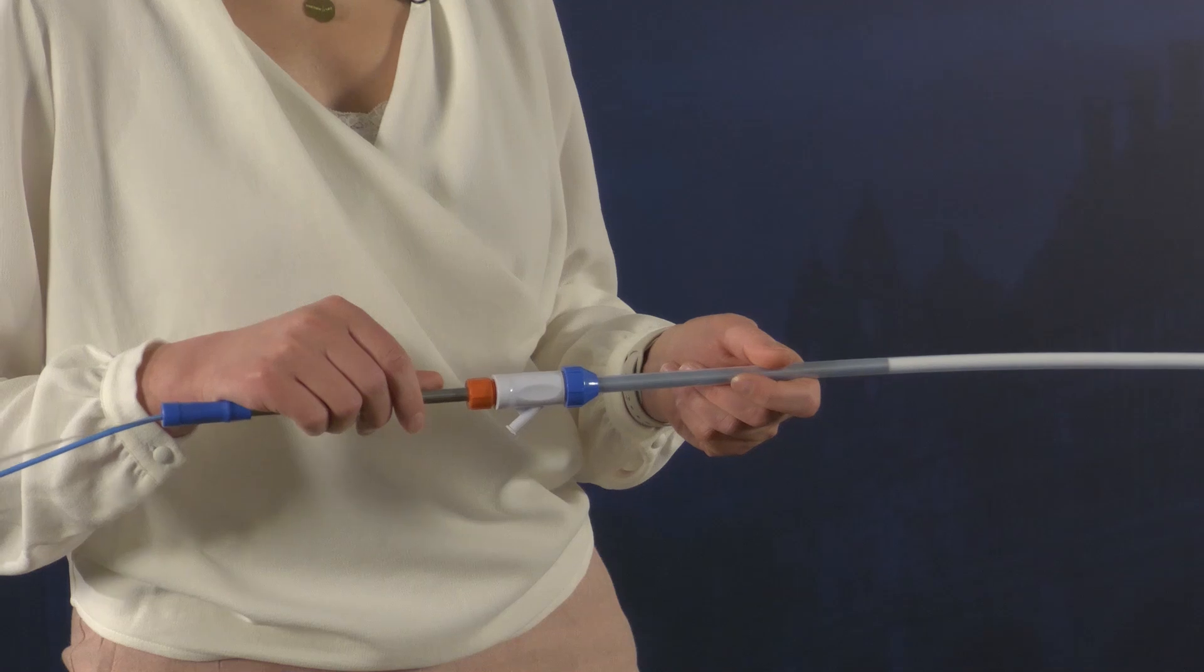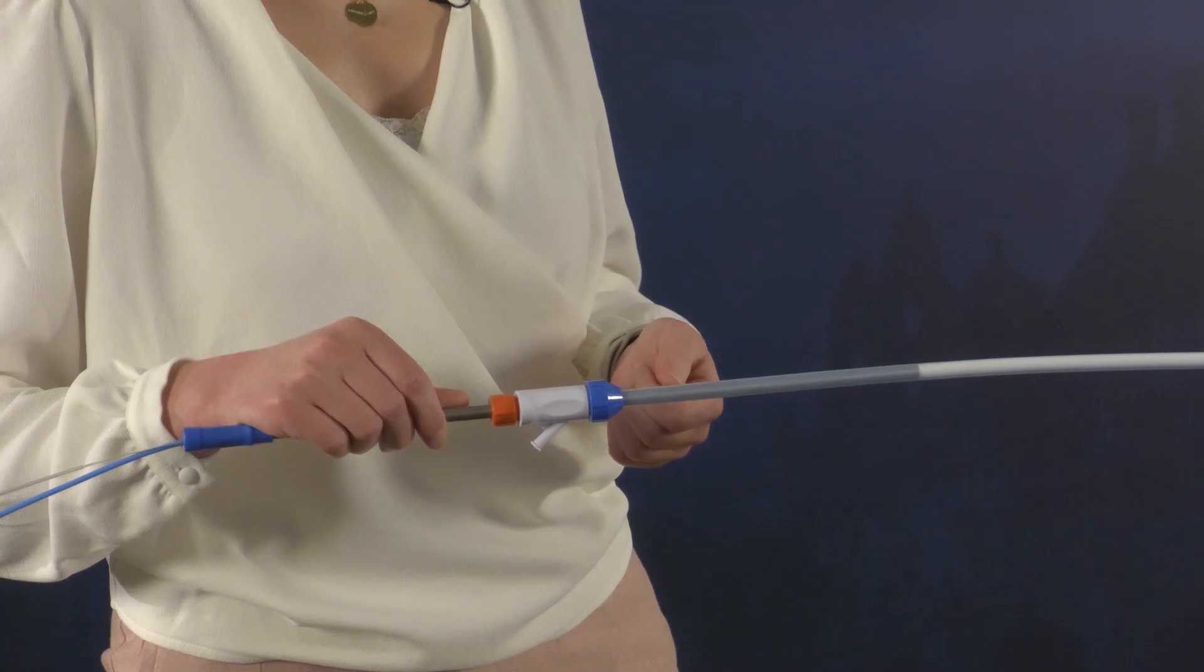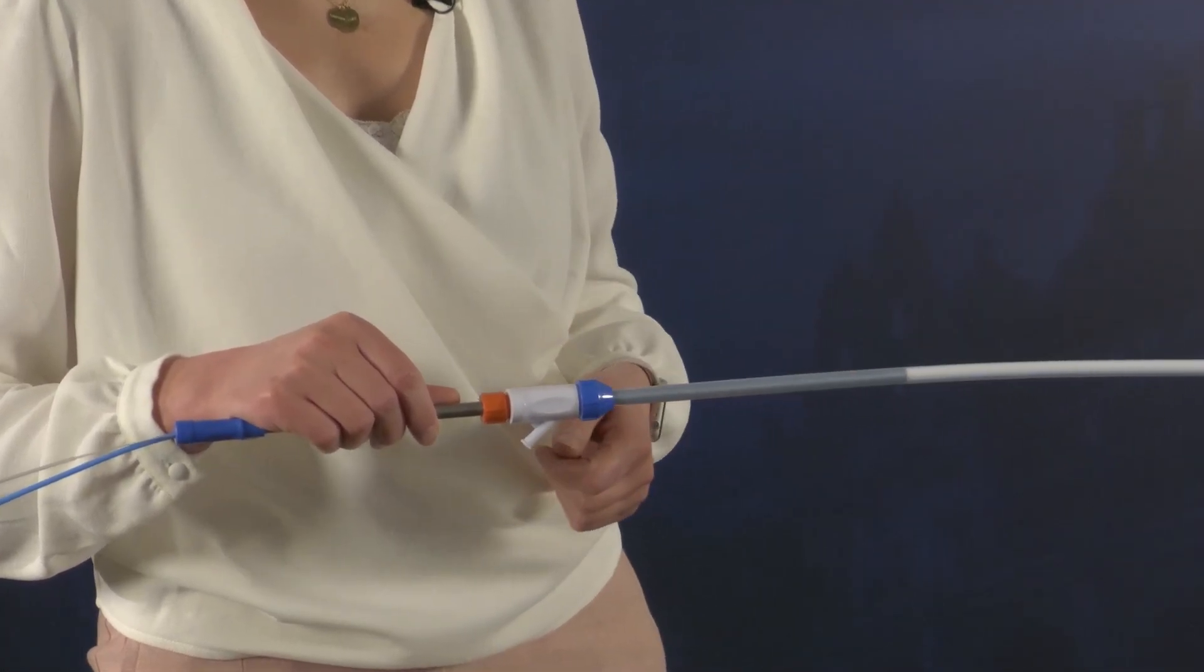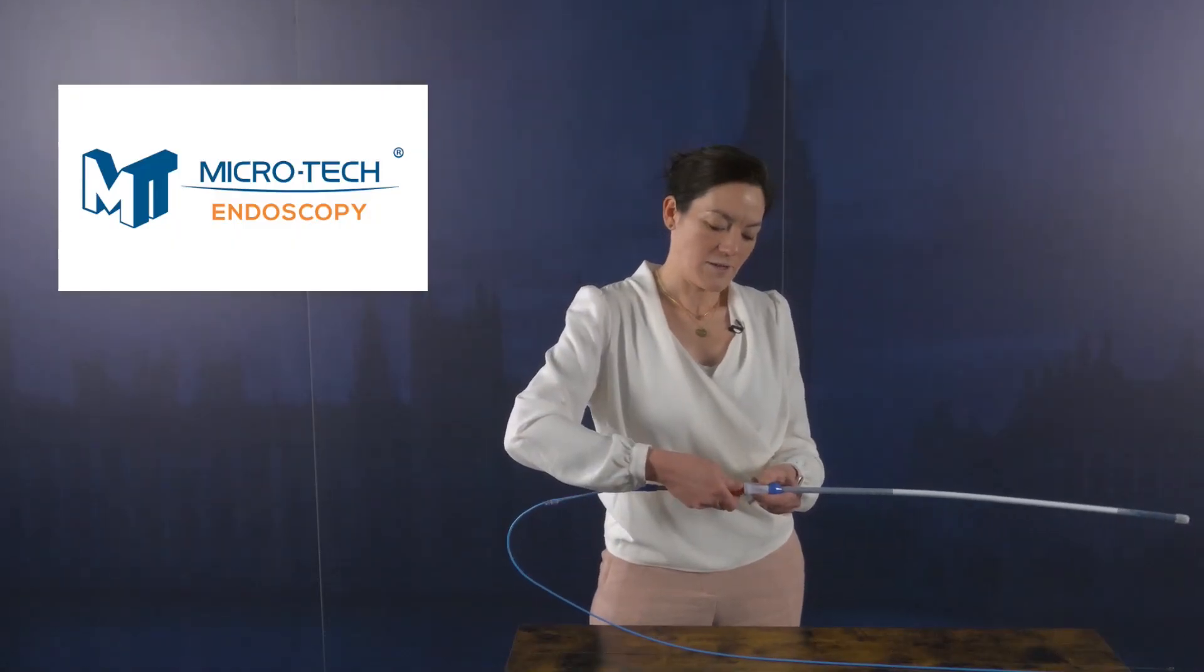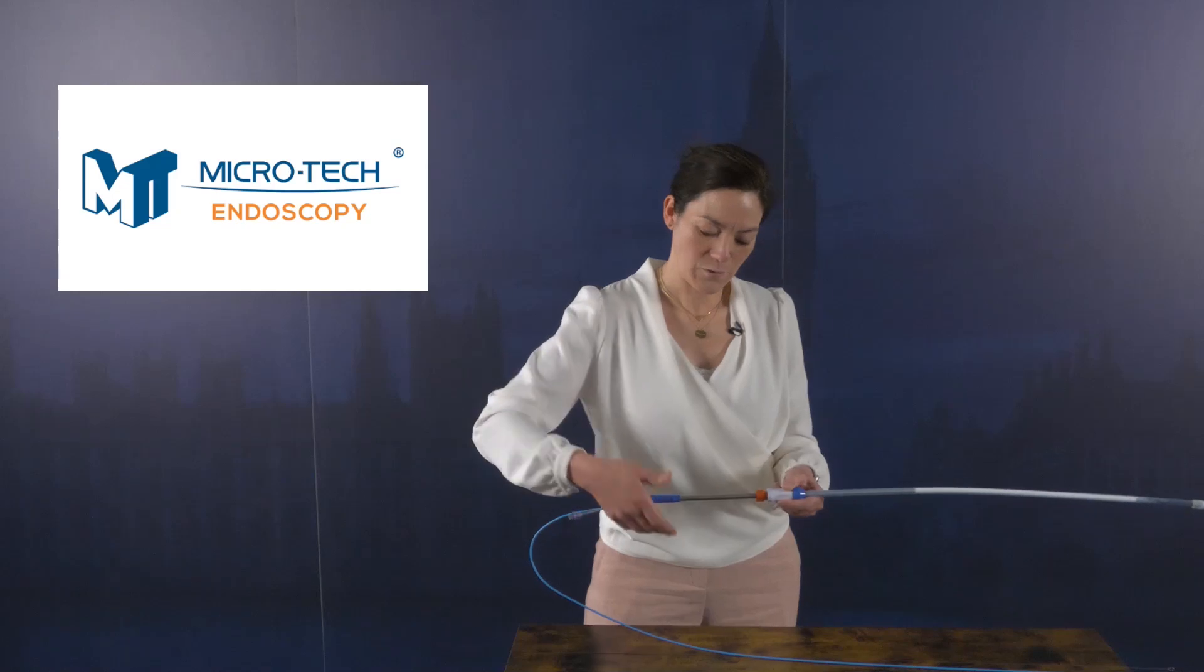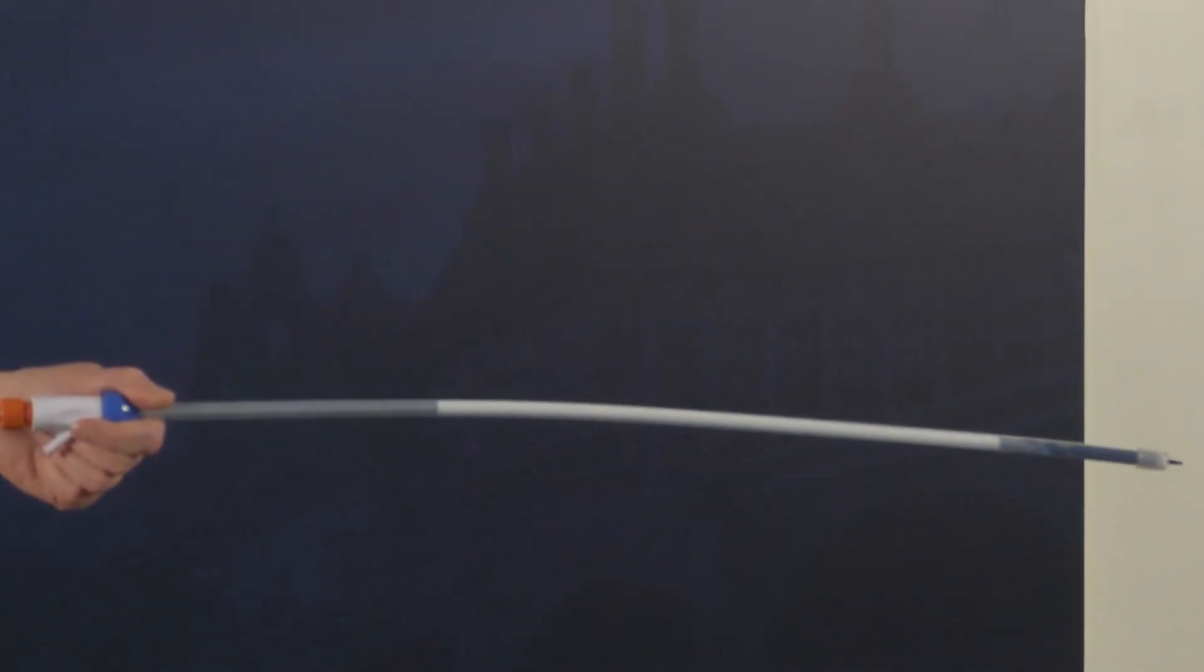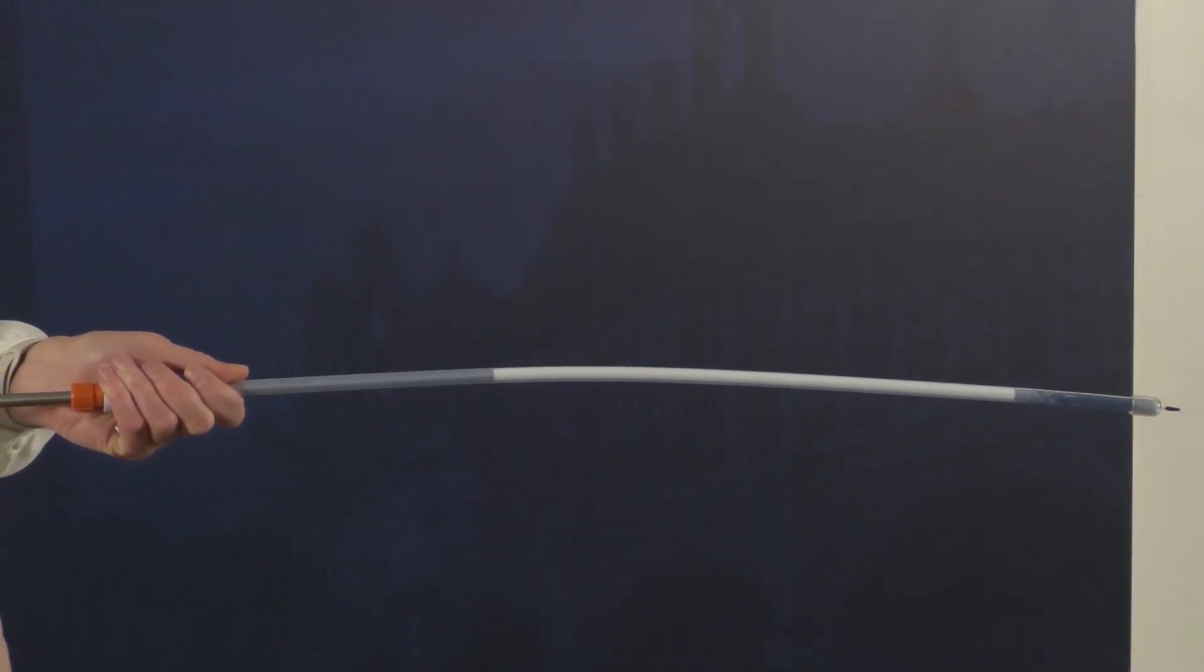It's a distal release system. Usually I do it under endoscopic visualization, so I put my endoscope in the patient next to the stent and you can really nicely see deployment. This orange connector is then just released. The nurse holds the stent and you can then deploy it by pulling back with the left hand in this case.